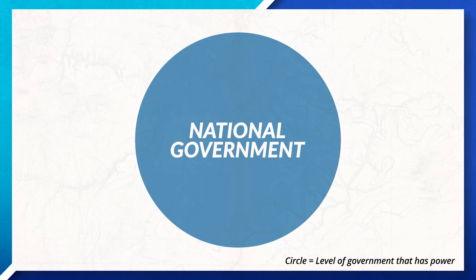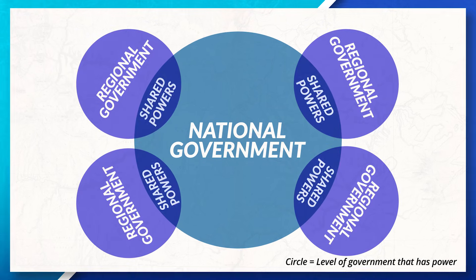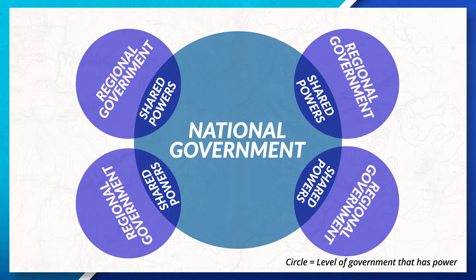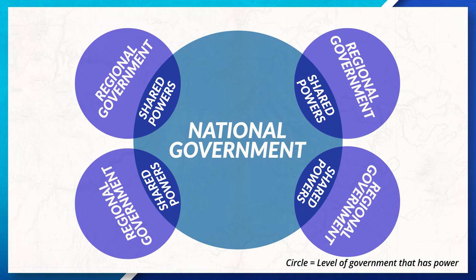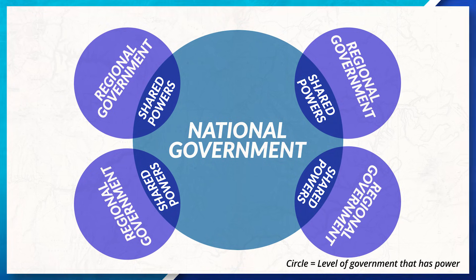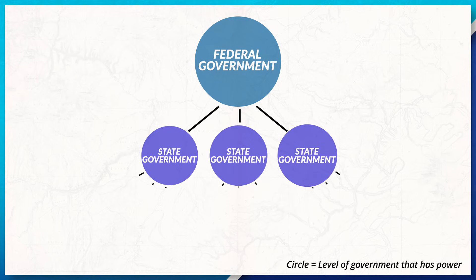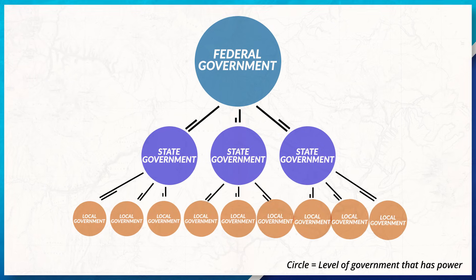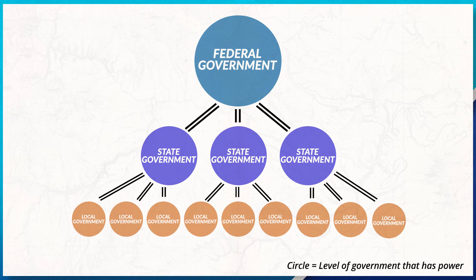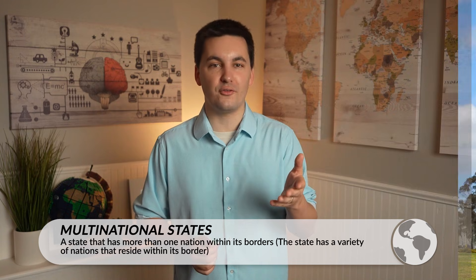On the other hand, we also have federal states. These states have power distributed between the national government and regional and local governments that exist within the state. This system is often used by states with a large geographic area, a high amount of diversity, or with states that have isolated populations. Oftentimes, multinational states will use this form of governance.